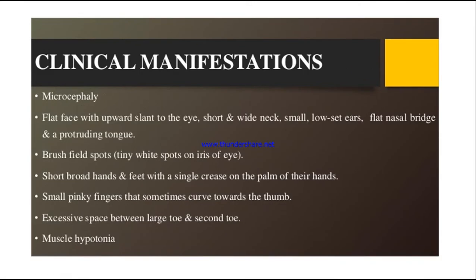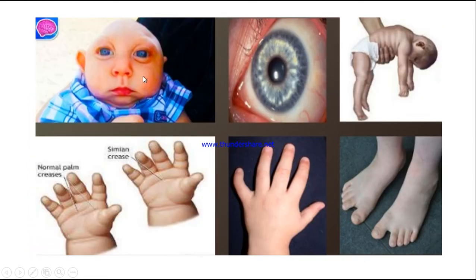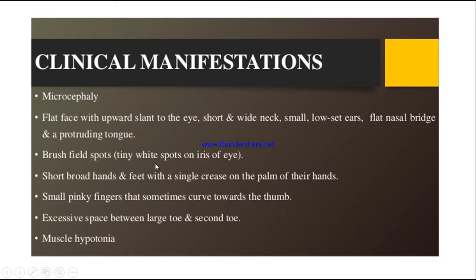The clinical manifestations of Down syndrome include: a flat face with upward slant to the eyes, short and wide neck, small low-set ears, a flat nasal bridge, and a protruding tongue. The eyes are slanting and the nasal bridge is flat. There will also be tiny white spots on the iris of the eye called Brushfield spots.